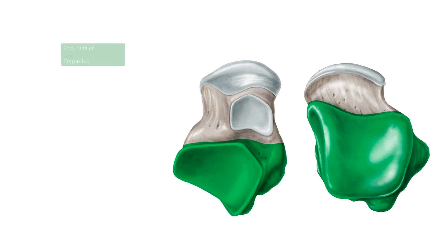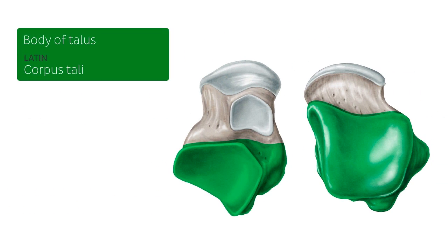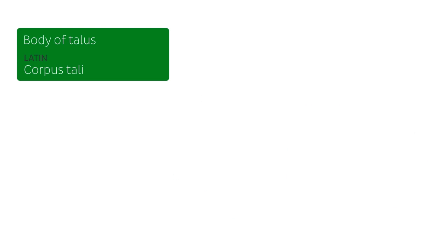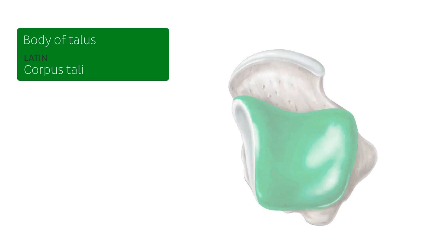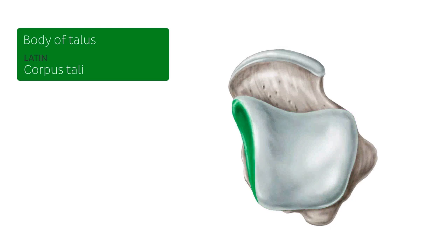The body of the talus, shown from its plantar surface on the left and dorsal surface on the right, has a smooth curved trochlea on its dorsal surface, which articulates with the distal end of the tibia. The talus also forms articulations with the medial malleolus of the tibia on the medial surface, and with the lateral malleolus of the fibula on the lateral surface of the talus body.